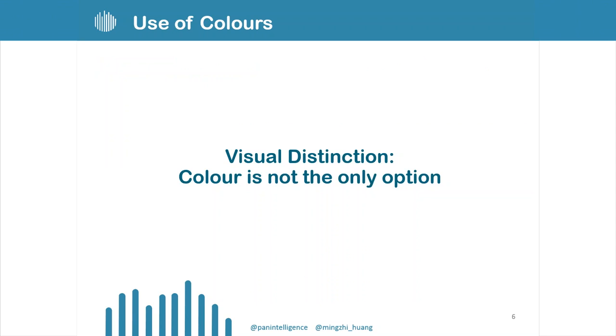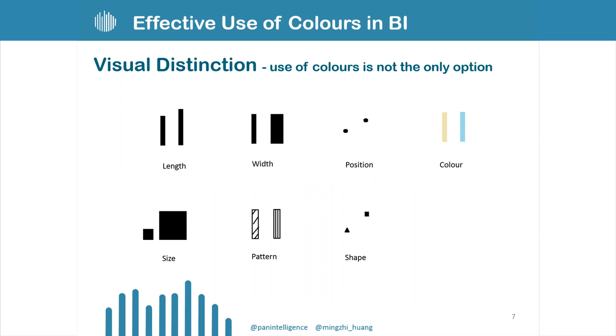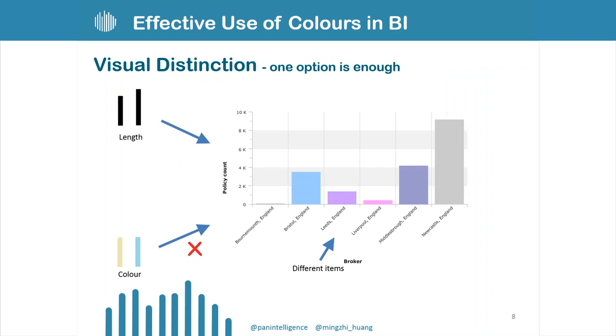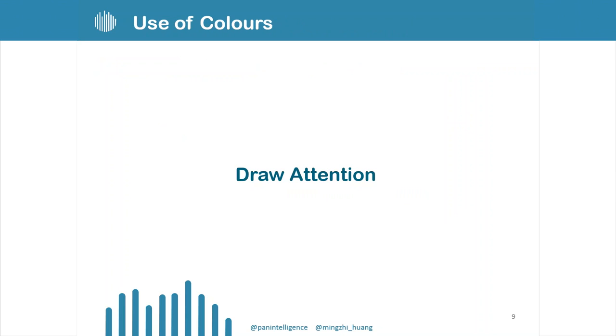In terms of visual distinction, color is actually not the only option. For example, you can use length, width, position, and size, pattern and shape as well to represent visual distinctions. If you use length to represent the data and use different items to represent different things, then if color doesn't offer any additional meaning, you don't need to use that for visual distinction. We can reserve color for some other purposes like drawing people's attention.